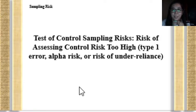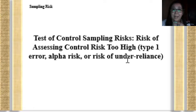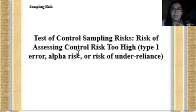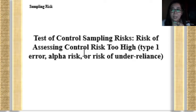The first type of risk under the test of control sampling risk is the risk of assessing control risk too high. This is also considered as type 1 error, alpha risk, or risk of under-reliance. In this case, the auditor, using a predetermined amount based on professional judgment and audit procedure, determines the level of control risk — this is just an estimate.